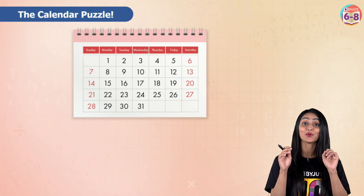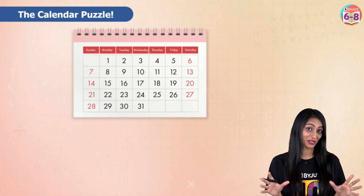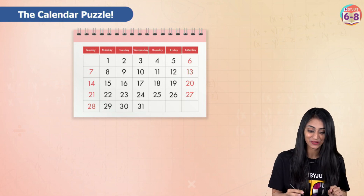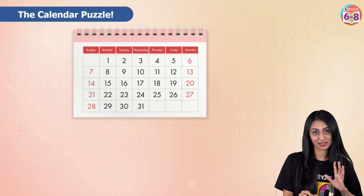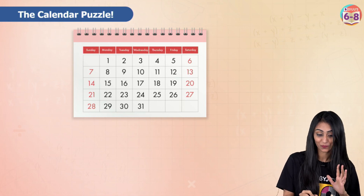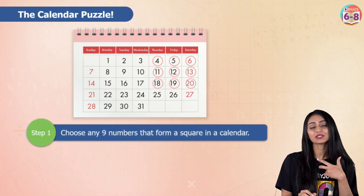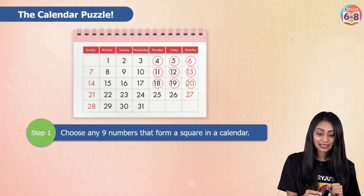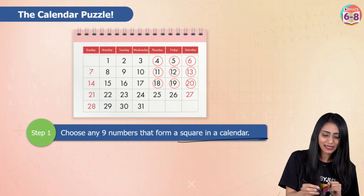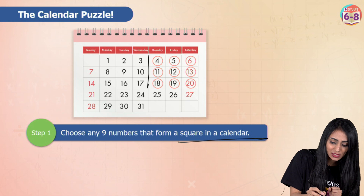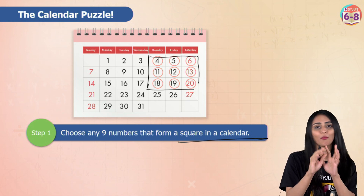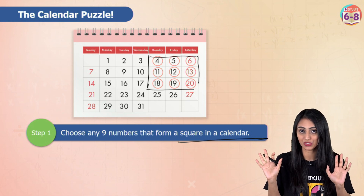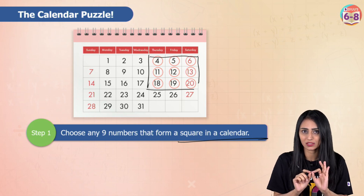Well, today I'm going to show you a magic trick that we can do with calendars. Okay, let's take a look. So basically there are a few steps that we have to follow. The first step is you have to choose any 9 numbers from this calendar that form a square. Like here you can see, these 9 numbers I have chosen, they are forming a square. Like this, you can think of any 9 numbers in a calendar which are forming a square.